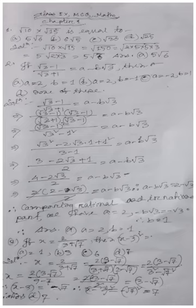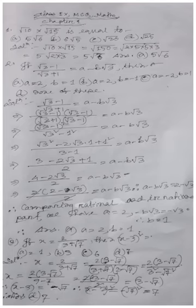Question number 3: if x = 2/(3 + √7), find the value of (x − 3)². The options are (a) 1, (b) 3, (c) 6, (d) 7. It looks tough but it is easy.